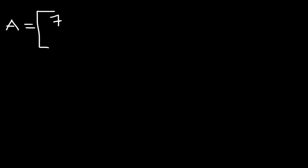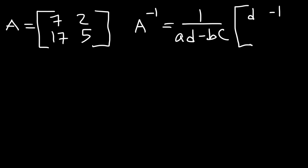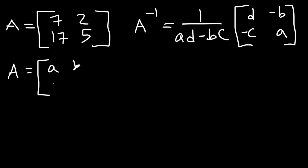Let's say we have a 2 by 2 square matrix. Matrix A has the elements 7, 2, 17, and 5. To find the inverse of matrix A, here's the formula: it's 1 over AD minus BC, times the matrix with elements D, negative B, negative C, and A. Matrix A contains the elements A, B, C, D in that order.